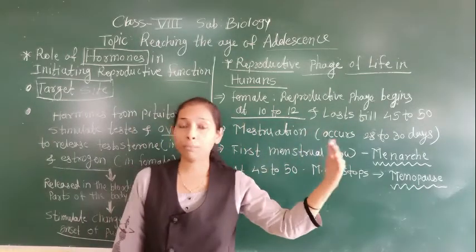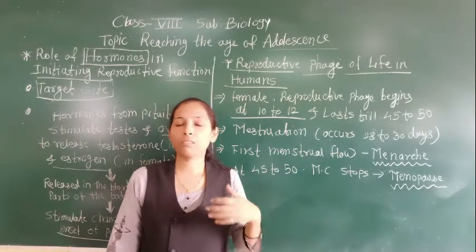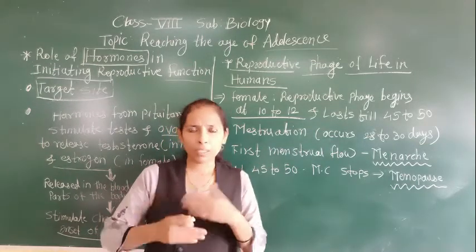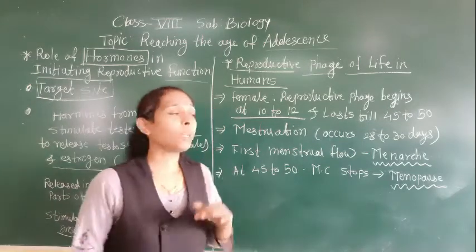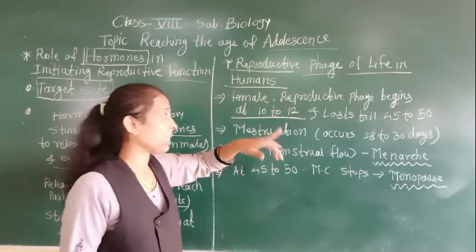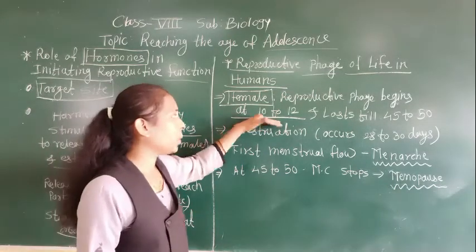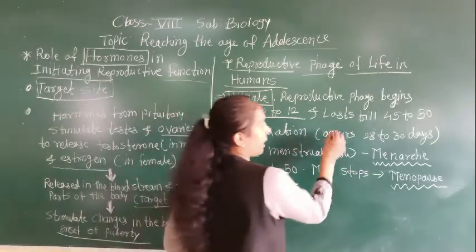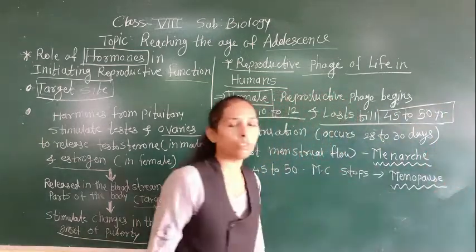As we have discussed in previous sections, females get more mature earlier than boys. The puberty phase starts at the age of 10 to 12 years, and so the reproductive phase begins at 10 to 12 years in females. Most probably it will last approximately until the age of 45 to 50 years.